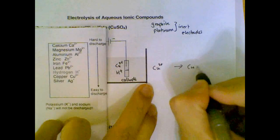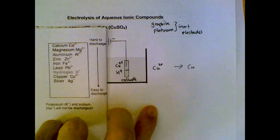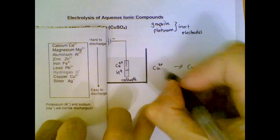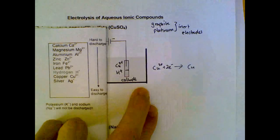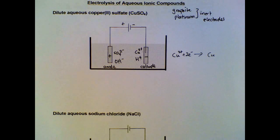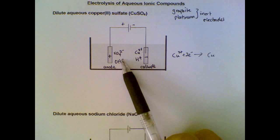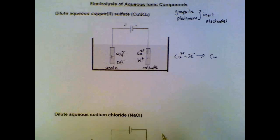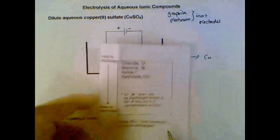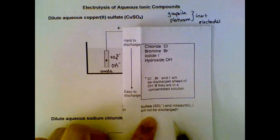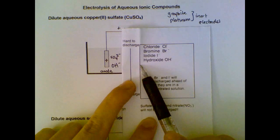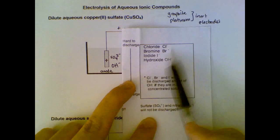The copper ion forms metallic copper by gaining two electrons. Now let's look at the anode. At the anode we have two competing anions: hydroxides and sulfates. We use a table to decide which will be preferentially discharged.